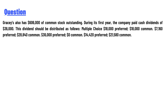During its first year, the company paid cash dividends of $36,000. This dividend should be distributed as follows — multiple choice: (A) $18,000 preferred, $18,000 common; (B) $7,160 preferred, $28,840 common; (C) $36,000 preferred, $0 common; (D) $14,420 preferred, $21,580 common.